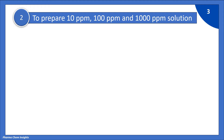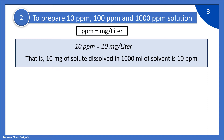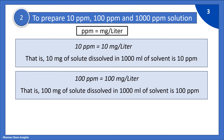To prepare 10 ppm, 100 ppm, and 1000 ppm solutions, we know that ppm is equal to mg per litre. So 10 ppm is equal to 10 mg per litre — 10 mg of solute dissolved in 1000 ml of solvent will give us 10 ppm. Similarly, 100 ppm is equal to 100 mg per litre — that is, 100 mg of solute dissolved in 1000 ml of solvent is 100 ppm.